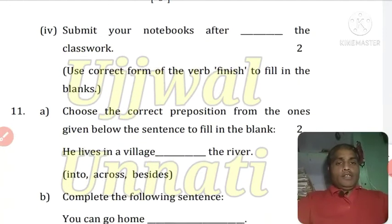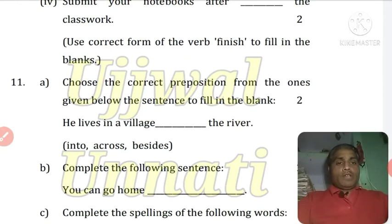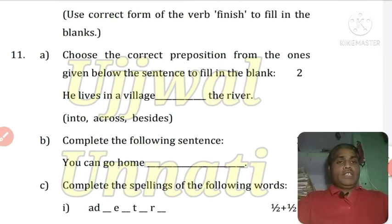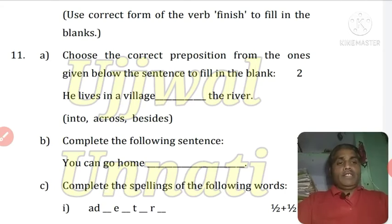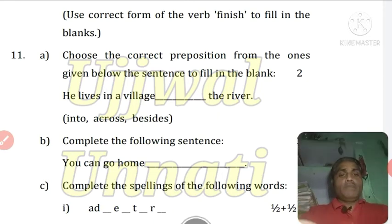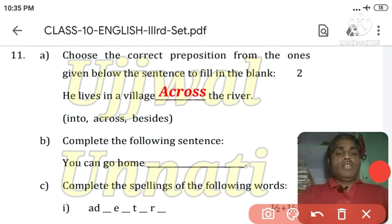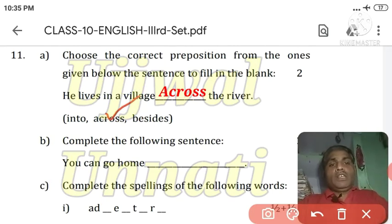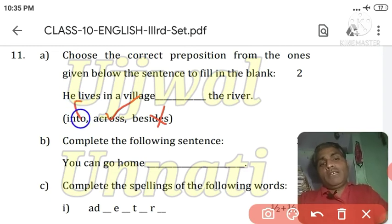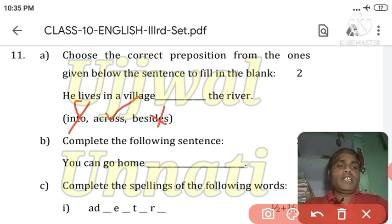Next: Choose the correct preposition from the ones given below the statement to fill in the blank. 'He lives in a village blank the river.' 'Into' will not work here. 'Besides' means 'in addition to' — wrong here. 'Across' means 'on the other side of the river.' The correct answer: He lives in a village across the river. यानी वे नदी के उस पार गाँव में रहता है।